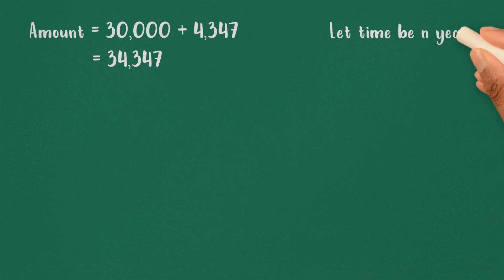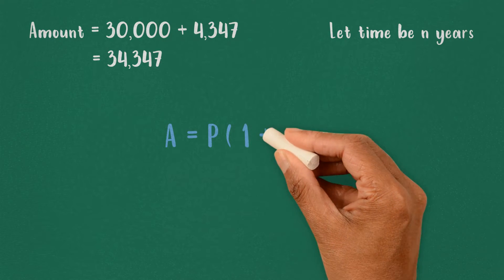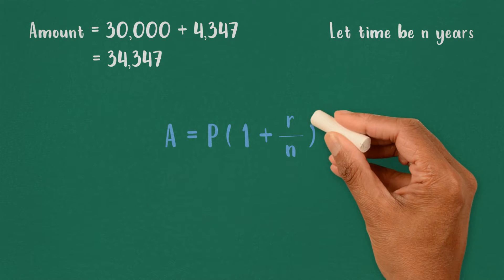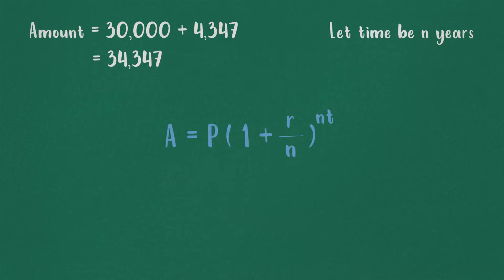Let time period be N years. Now, compound interest formula is A equals P times 1 plus R by N, whole raised to the power of N, T,